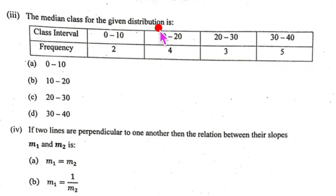The third one, the median class of the given distribution. Now you have 0 to 10, 10 to 20, 20 to 30 and 30 to 40 with these frequencies. So you will have to write cumulative frequencies. Cumulative frequencies will be 2, 6, 9 and 14.